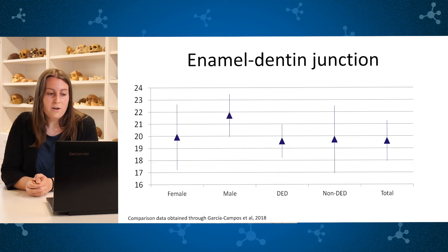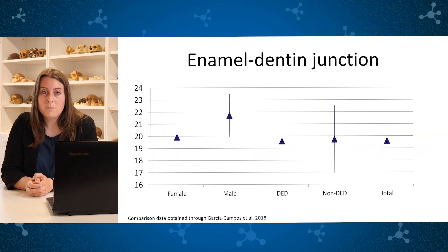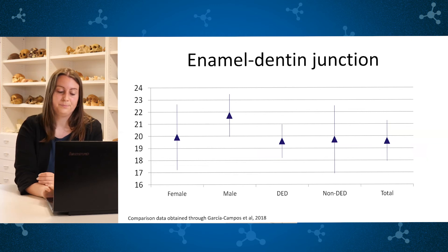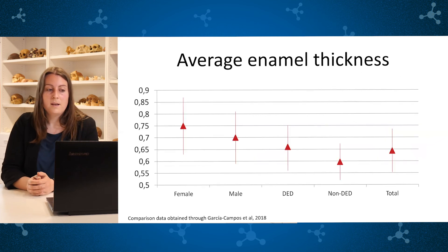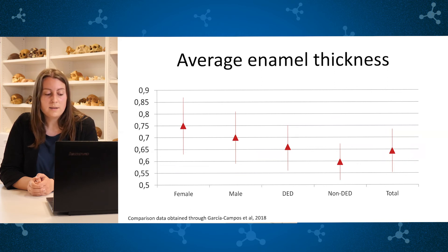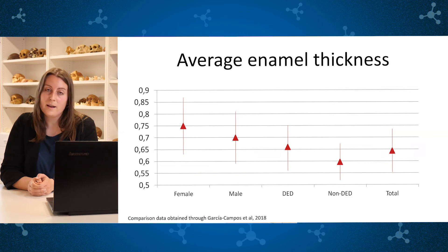In the case of the enamel-dentine junction, we can see that the values of San Pablo individuals — both those with enamel defects and those without — are more similar to those of the female individuals from Garcia Campos. When we calculate the average enamel thickness, the data from San Pablo individuals are lower than those studied by Garcia Campos, especially those without dental enamel defects.